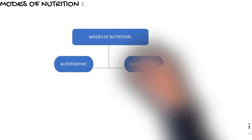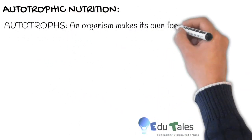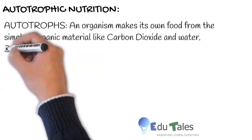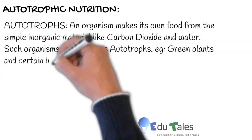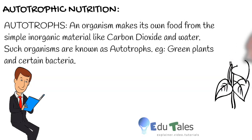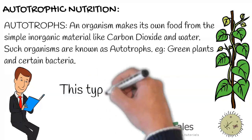Modes of nutrition: there are two modes. First is autotrophic, second is heterotrophic, which is further divided into saprophytic, parasitic, and holozoic. In autotrophic nutrition, an organism makes its own food from simple inorganic materials like carbon dioxide and water. Such organisms are known as autotrophs. Examples are green plants and certain bacteria.